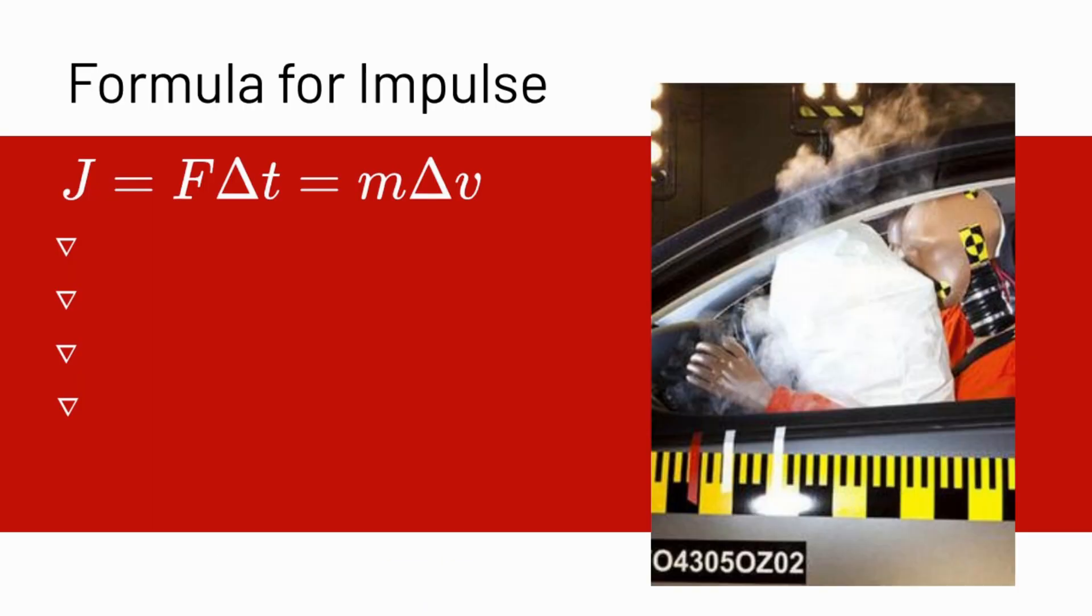Let's look at the formula for impulse. We have J for impulse because I is taken already for current. So we have F times delta T equals M times delta V, and this is the impulse momentum theorem.